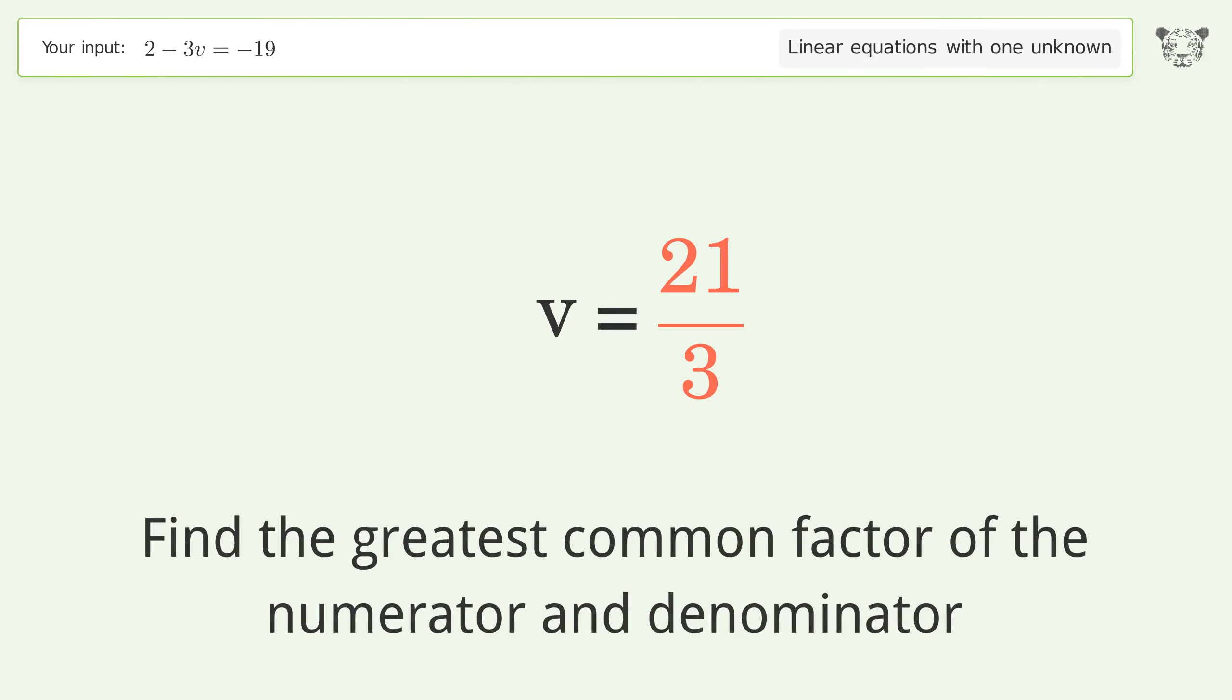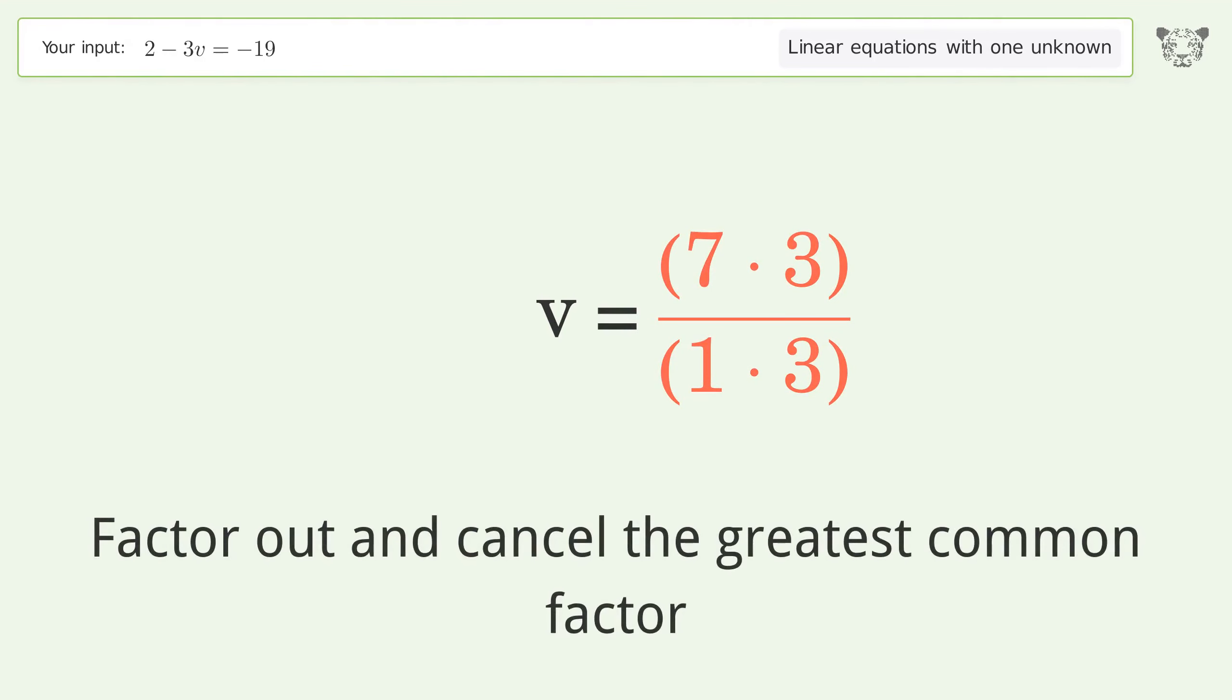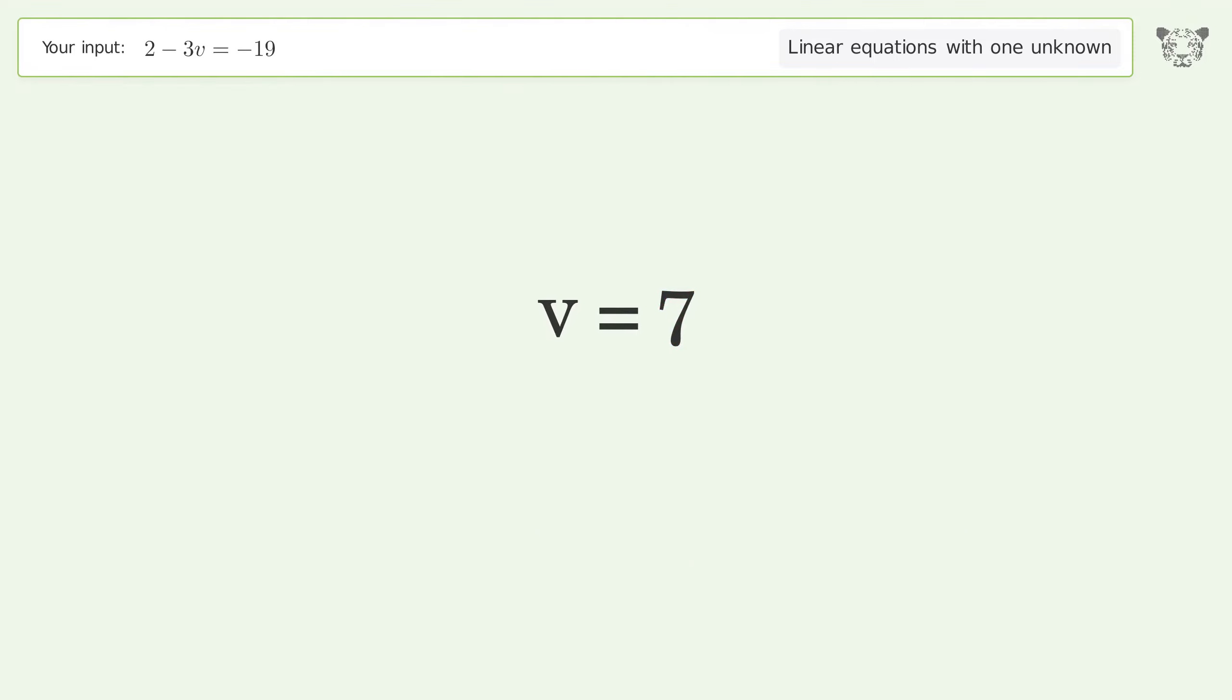Find the greatest common factor of the numerator and denominator. Factor out and cancel the greatest common factor. And so the final result is v equals 7.